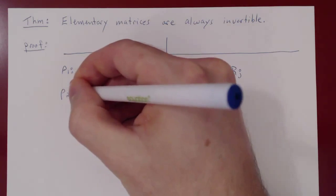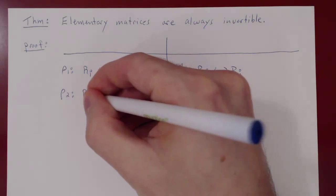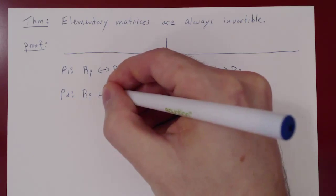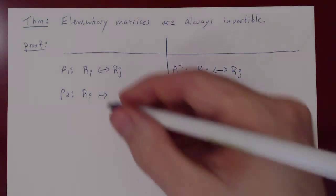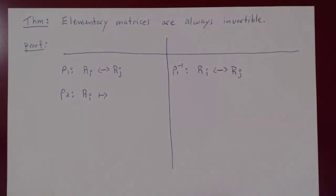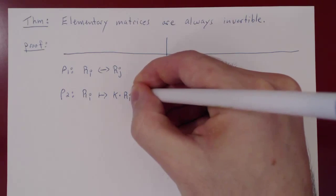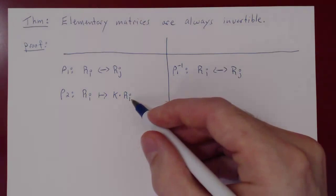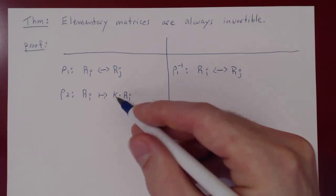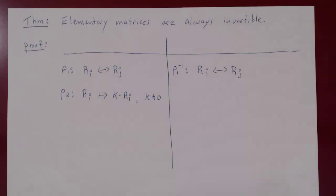What's the second type of row operation? Call this row 2. You take some row and you transform it by, right, this is the transformation arrow, you transform it by saying k times row i. So you multiply the entire row by a fixed constant. But keep in mind, k is non-zero. How would you invert this?